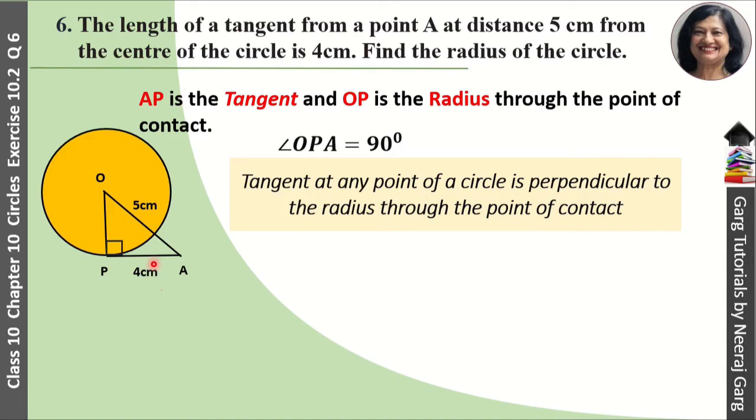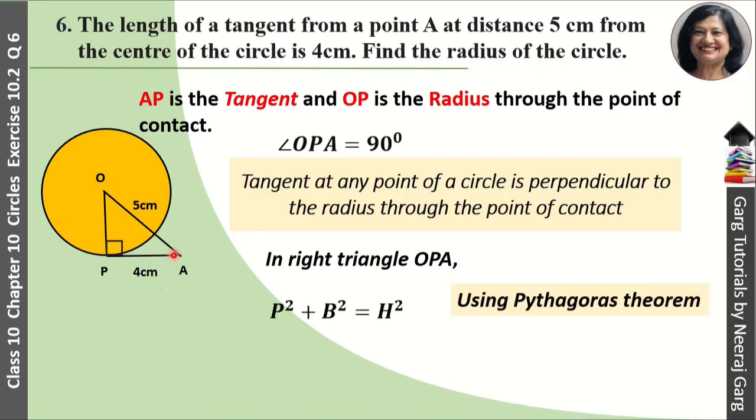Ab haamne kya kare na hai? Ye angle a gaya 90 degree. To haamne ye triangle le na hai in triangle OPA. And using Pythagoras theorem. Pythagoras theorem kya kerti hai? Perpendicular ka square plus base square that is equal to hypotenuse square.